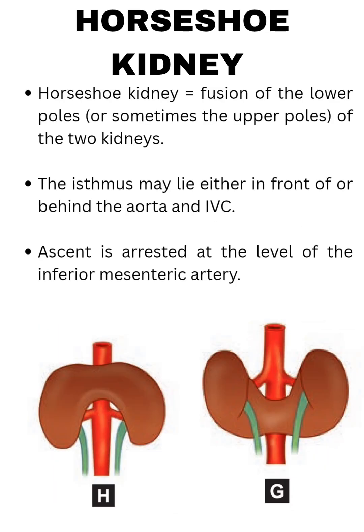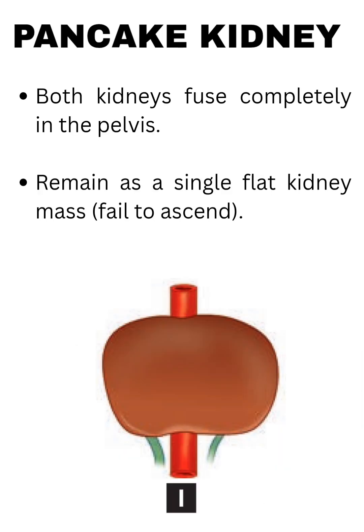Horseshoe kidney: fusion of the lower poles, or sometimes the upper poles, of the two kidneys. The isthmus may lie either in front of or behind the aorta and IVC. Ascent is arrested at the level of the inferior mesenteric artery.